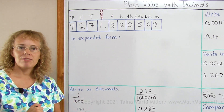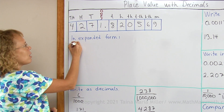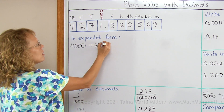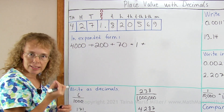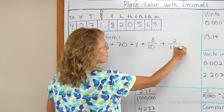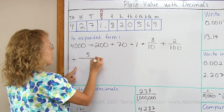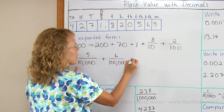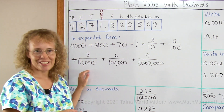If we now write this in expanded form, it means we take each digit and its value. So digit four here — its value is four thousand — so I write four thousand and then add. This digit has a value of two hundred, so I write two hundred. Then this one is seventy, and then comes one, and then this one here is eight tenths. Next comes two hundredths, and next zero thousandths — I don't have to write that. Then five ten-thousandths, then six hundred-thousandths, and lastly nine millionths. So it takes quite some time to write it in expanded form.